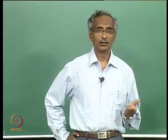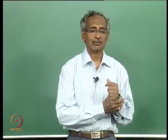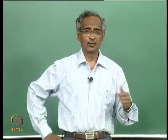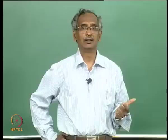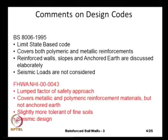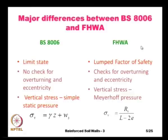Other design codes that are equally elaborate are the French codes and the German codes. These are some of the major differences between the British Standard BS 8006 and the Federal Highway Administration Design Code FHWA: one is the limit state design and the other is the lumped factor of safety approach.